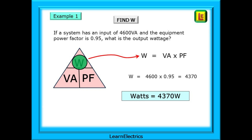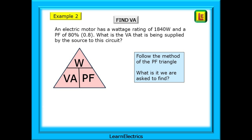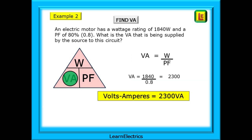Example 2 — find VA: an electric motor has an output wattage rating of 1840 watts and a PF of 80%, or 0.8. What VA is being supplied by the source? Since watts is known, VA must be more than 1840. VA equals 1840 divided by 0.8, which gives 2300 VA.